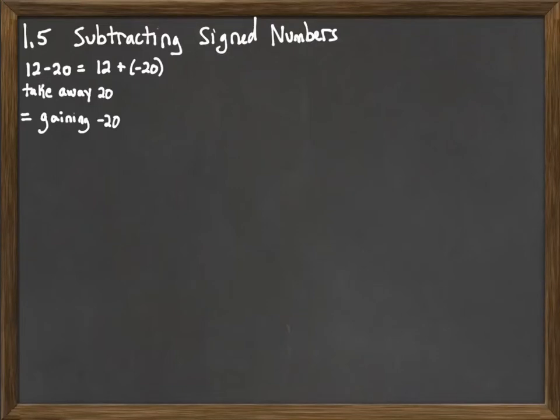In the case of 12 plus negative 20, we would take their difference. 20 minus 12 is 8. And then we keep that sign which is negative 8. So that's how you want to think of subtraction. Subtraction is taking away. So taking away a positive number is the same as adding on or gaining a negative number.